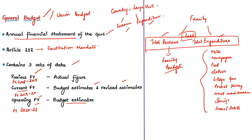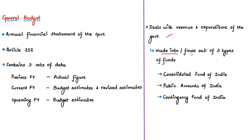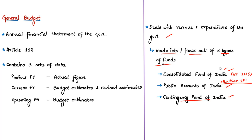Revenue and expenditure flow into and out of three types of funds. One is the Consolidated Fund of India, the next is the Public Accounts of India, and the third is the Contingency Fund of India. The Consolidated Fund of India is mentioned under Article 266 clause 1. It says that all revenues received by the government, all loans raised through treasury bills, ways and means advances, and all monies received in repayment of loans shall form the Consolidated Fund of India, and all expenditure including repayment of debts is spent from it.